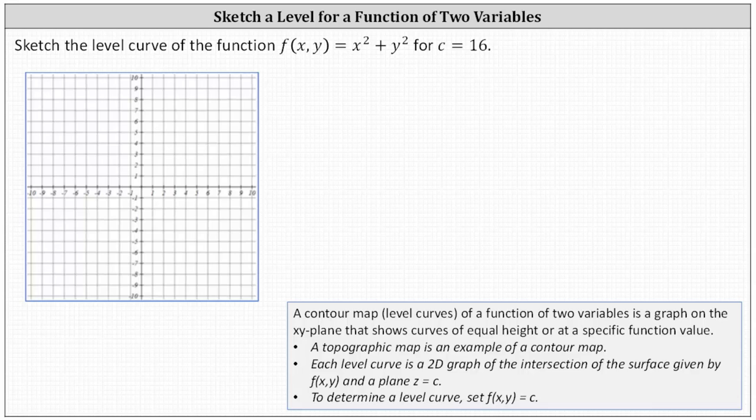Recall a contour map or set of level curves of a function of two variables is a graph on the xy plane that shows curves of equal height or at a specific function value. A topographic map is an example of a contour map.